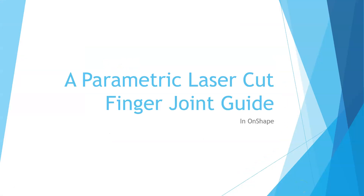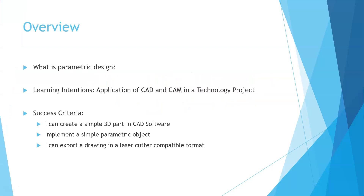Let's create a parametric laser cut finger joint guide in Onshape. Before we begin, we need to understand what parametric design is. Parametric design is to design an object, usually in computer-aided design software, which can change according to certain variables. In our case, it's going to be the width and thickness of the timber we're using to create our finger joints.